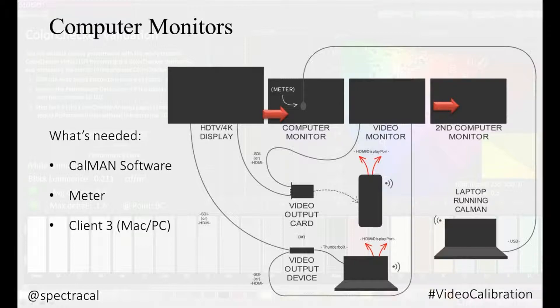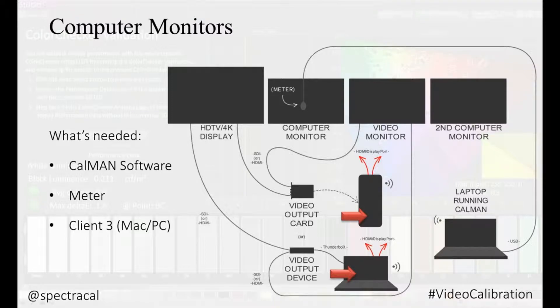You want to set the backlight level to match the output of the other display systems. Then calibrate the 1D LUT on the graphics card for grayscale and gamma, and create an ICC profile to be loaded into the operating system.